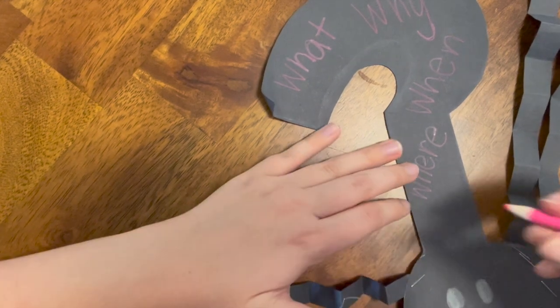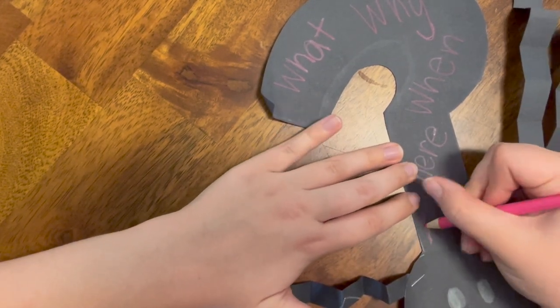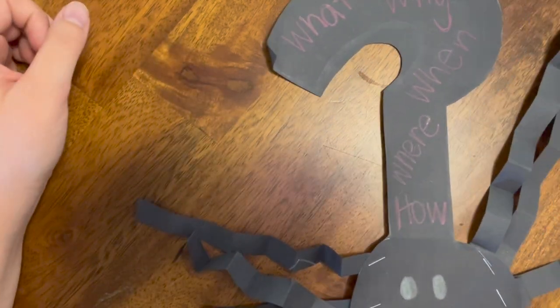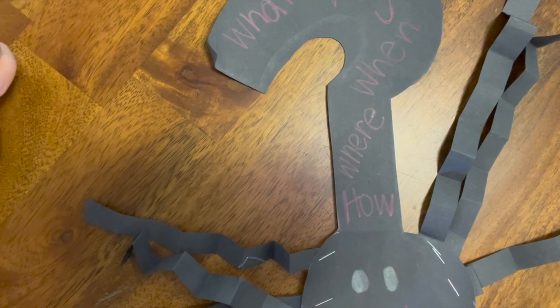Lastly we are going to write how, which is spelled H-O-W. These are the words that are going to help us know what questions we should be asking when we are reading a story or we have questions about a situation or topic.